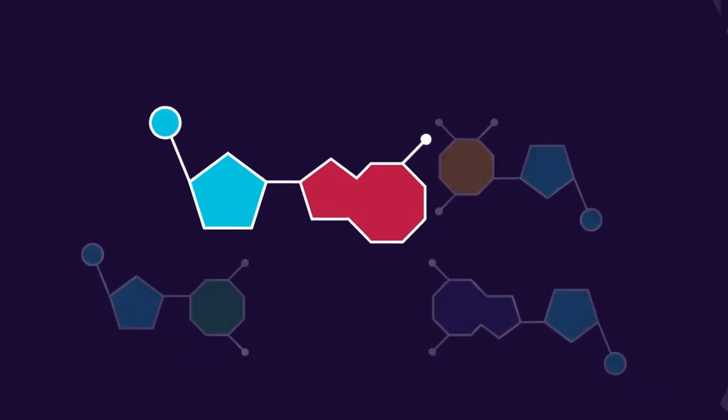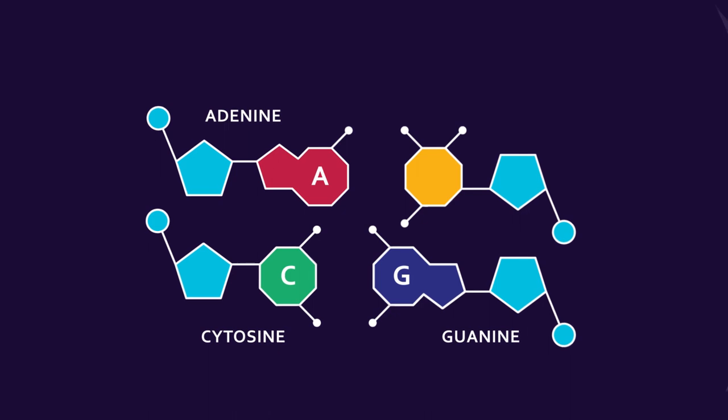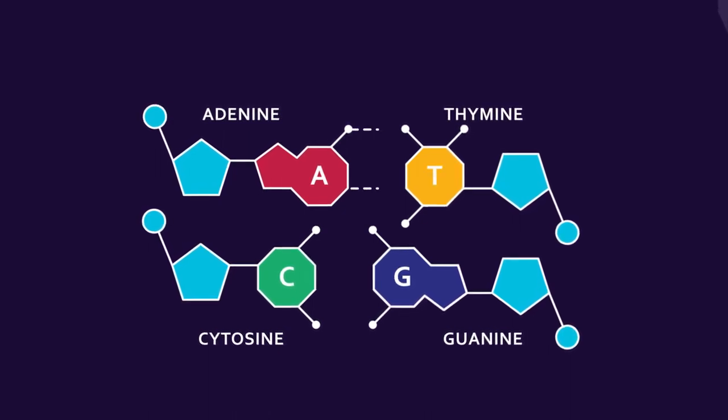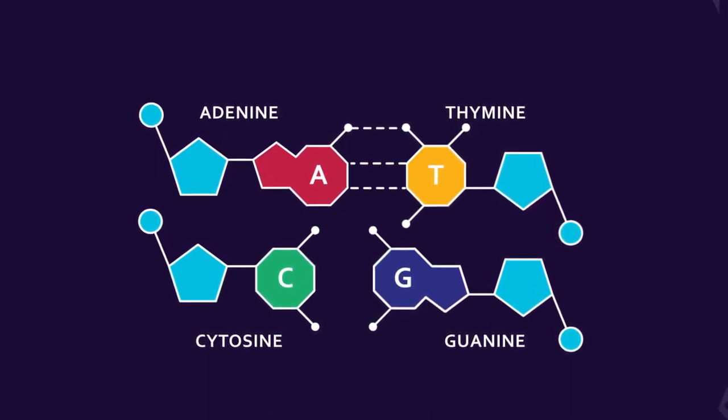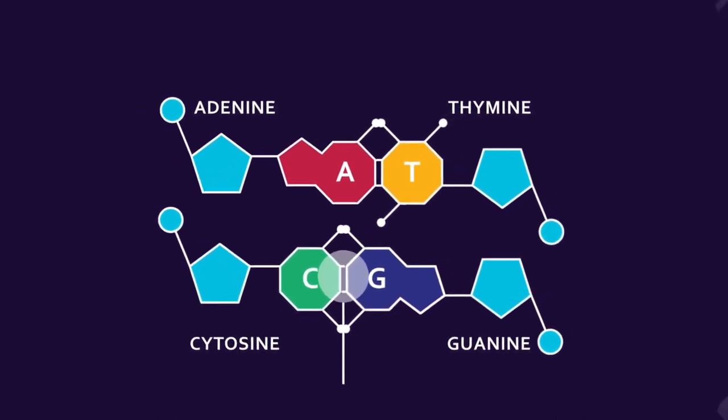The nitrogenous bases are of four different types: adenine, guanine, cytosine, and thymine. Adenine will always bind with thymine, and cytosine with guanine. This type of bonding is hydrogen bonding.